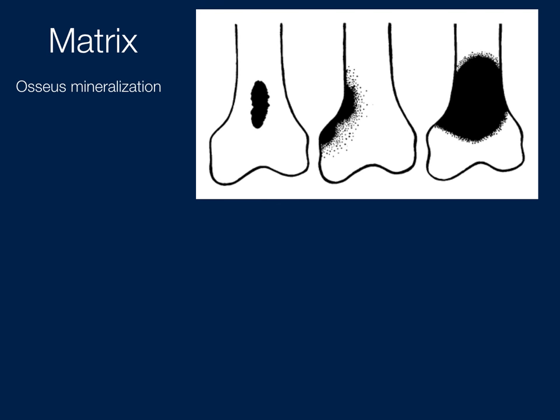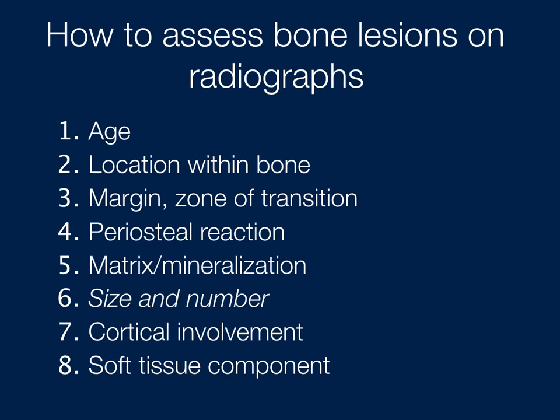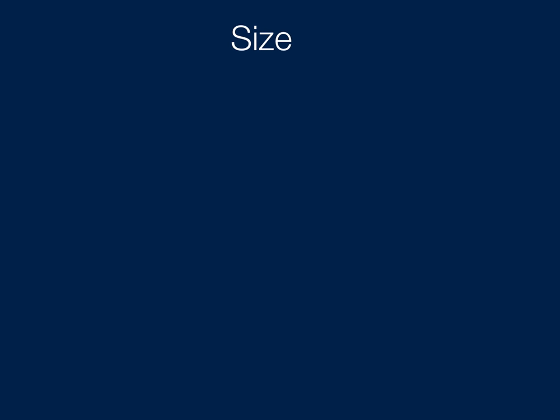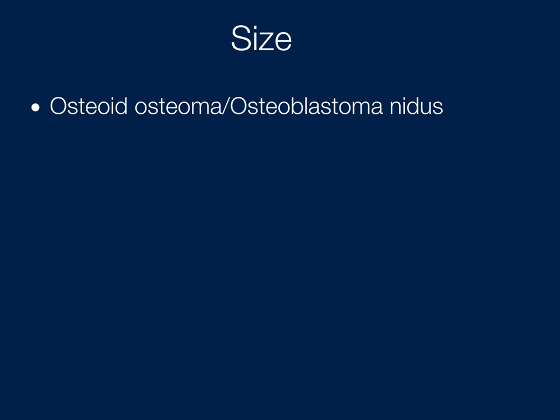Then there is the osseous matrix — you can see a solid, osseous, sclerotic region, cloud-like or ivory-like. Regarding size: an osteoid osteoma when larger becomes termed an osteoblastoma, even though histologically they are the same. Similarly, fibrous cortical defect becomes non-ossifying fibroma.